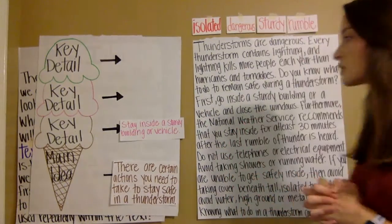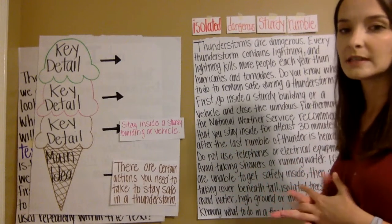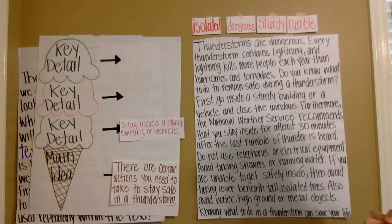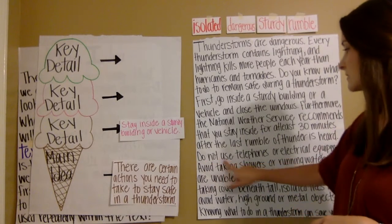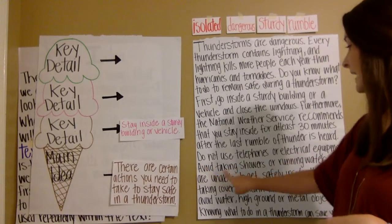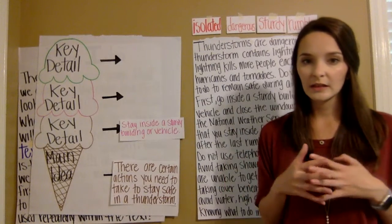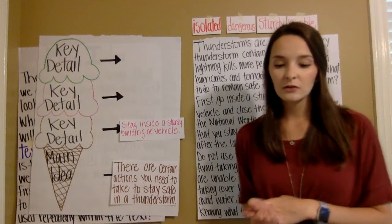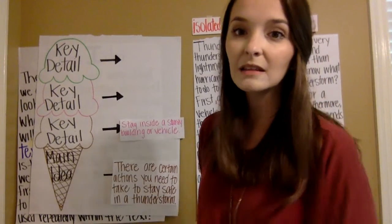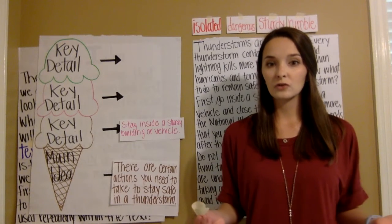So now we have to find three details that help us know there are certain actions you have to take in order to stay safe. What is a signal word that helps you know the order that things are happening? First. First tells us it's the beginning of a list, the start of something. So it says: first, go inside a sturdy building or vehicle and close the windows. That is one way that you can stay safe, so we're going to put that as our first key detail. Key details don't have to go in any specific order as long as they support what you choose for your main idea — what the whole story is mostly about.